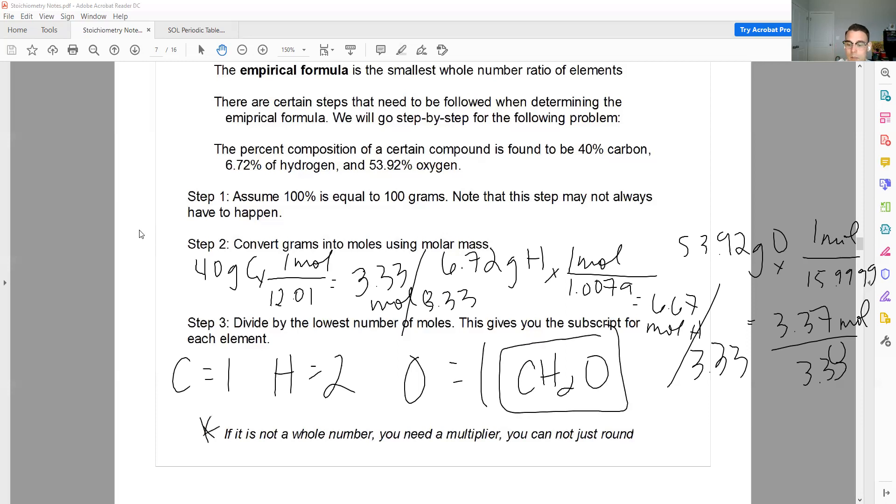Now here, it says if it's not a whole number, you need a multiplier and you cannot just round. For example, if I had C was 1, H was 2, and oxygen was 1.5, I can't just round that to 2. That changes my answer way too much. So I need a multiplier. What I'd end up having to do is take everything and multiply it by 2 so I could have a whole number. So that would give me C2H4O3. And that would be my empirical formula. So if you have something with 0.25, 0.5, 0.33, 0.75, those things are going to need multipliers. You're not going to want to round from 1.25 down to 1. That'll change your answer too much.